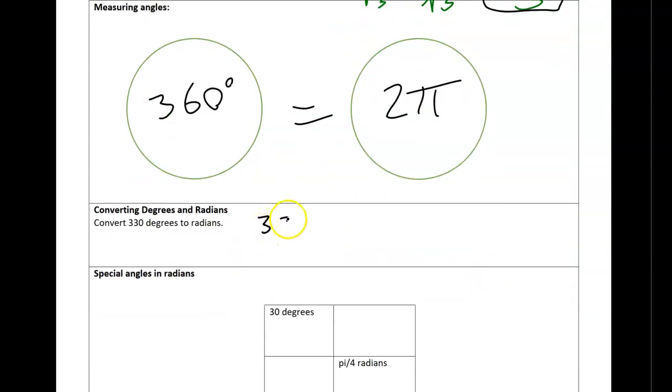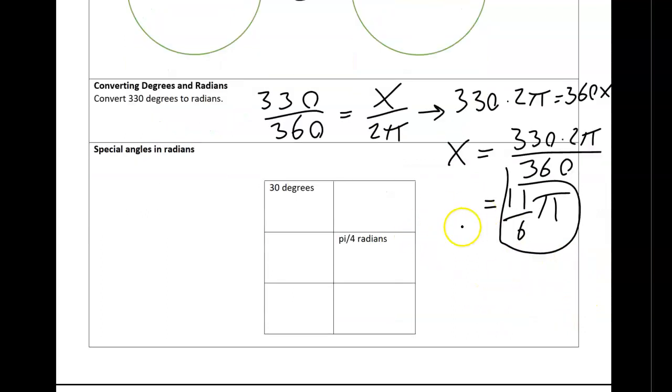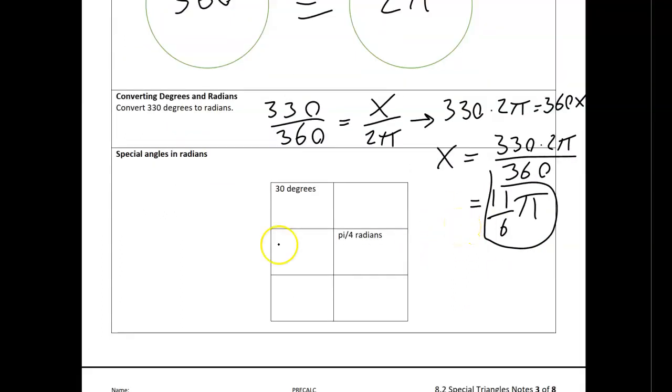So what that means is I can set up a proportion. I can be like 330 over 360 equals x over 2 pi. And then I can cross multiply. And I'll get 330 times 2 pi equals 360 x. Divide both sides by 360. And then simplify. And what's left over is 11 over 6. And I just did that fraction on my calculator. So here's an example of how to convert.